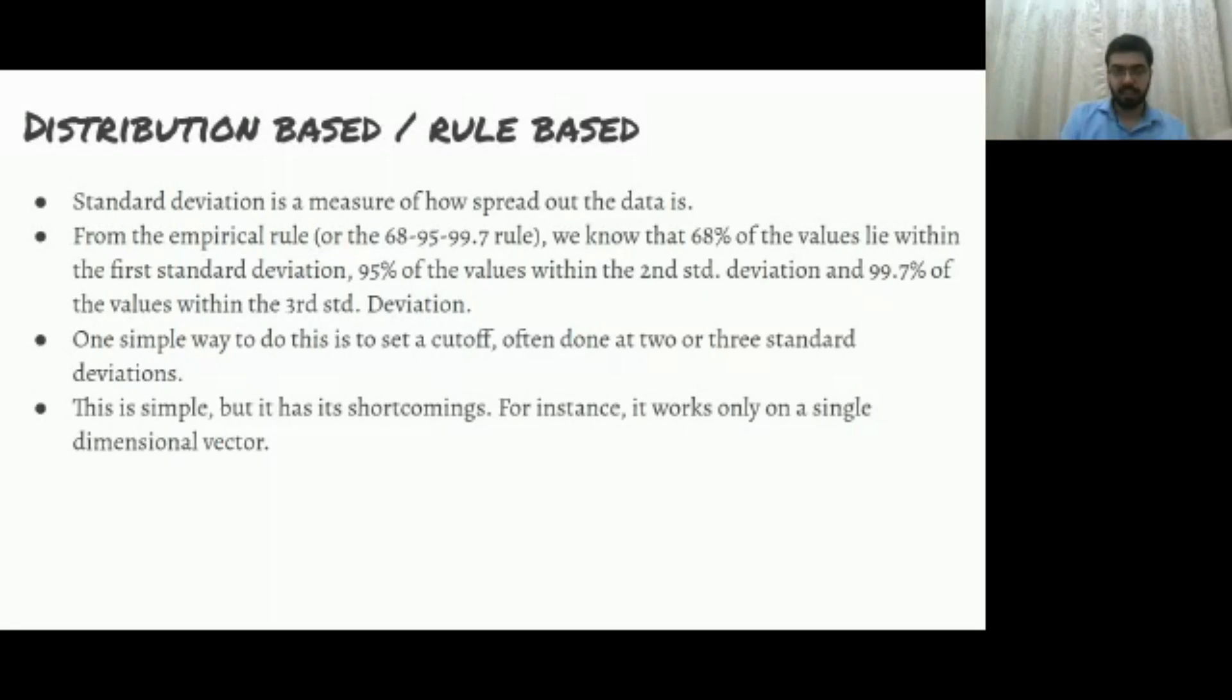This is simple. We all know, we saw it, it's very simple. You just put a threshold there and say that this is my outlier. But it has its own shortcomings. For instance, it works only on a single dimensional vector. What that means is you have only one column on which you can apply this individually. I mean, you have to apply this on each column. It doesn't take into account the entire dataset.